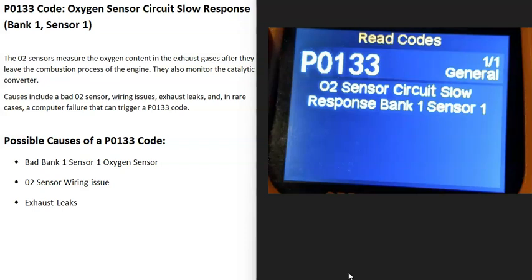Today I'm talking about a P0133 code, what it is and how you go about fixing it. A P0133 code is an oxygen sensor circuit slow response, bank one sensor one.